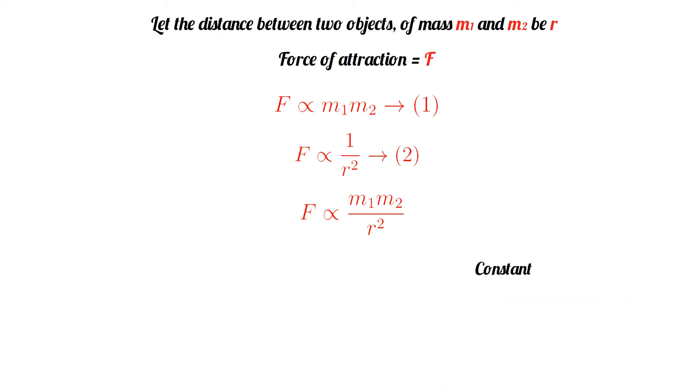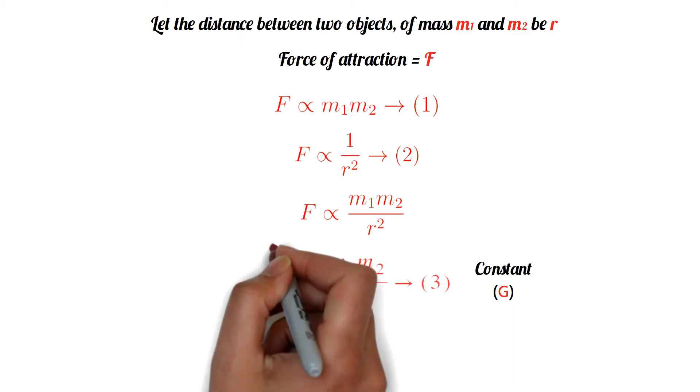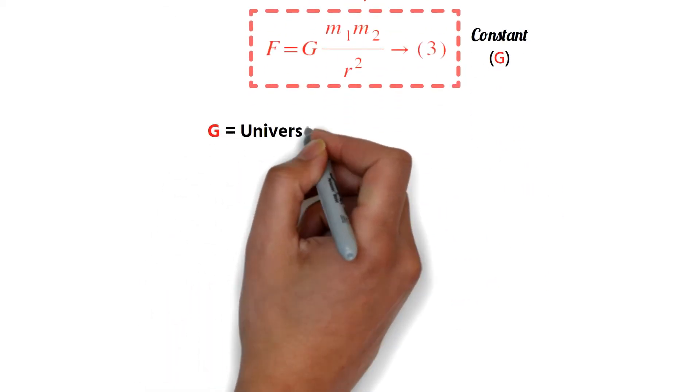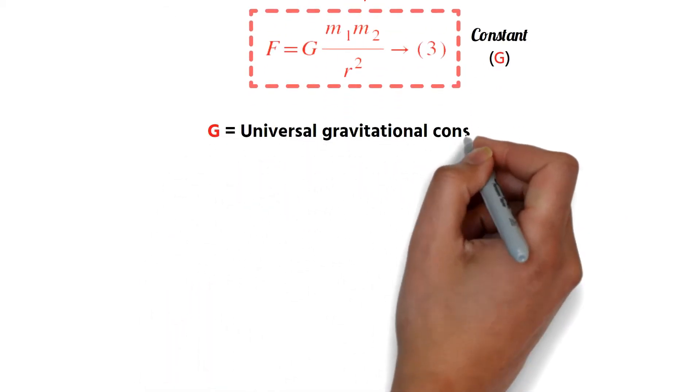Now we need a constant to replace the proportionality symbol and place an equal sign there. This constant is taken here as G, so the formula is written as F equals G M1 M2 divided by R square. This is the formula for the gravitational attraction between two objects in this universe. Here G is known as the Universal Gravitational Constant.